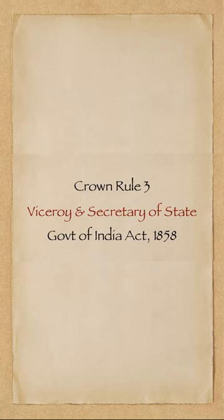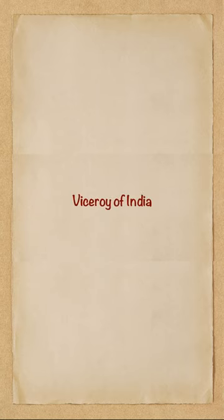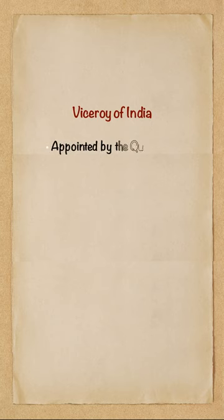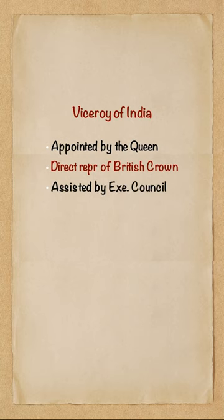First, let's check more details about the post of Viceroy of India. Viceroy and Governors were appointed by the Queen, or the British Crown. Viceroy was the direct representative of the British Crown in India. By the act, the Viceroy of India was to be assisted by an Executive Council. Lord Canning became the first Viceroy of India.